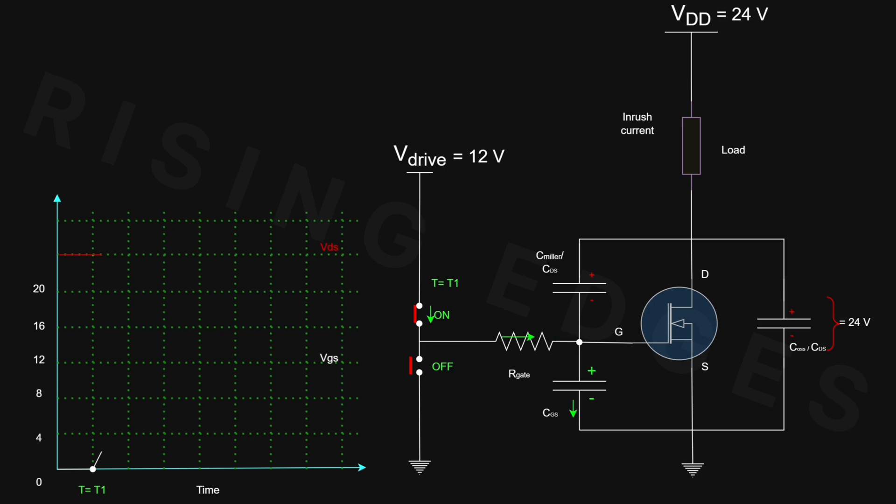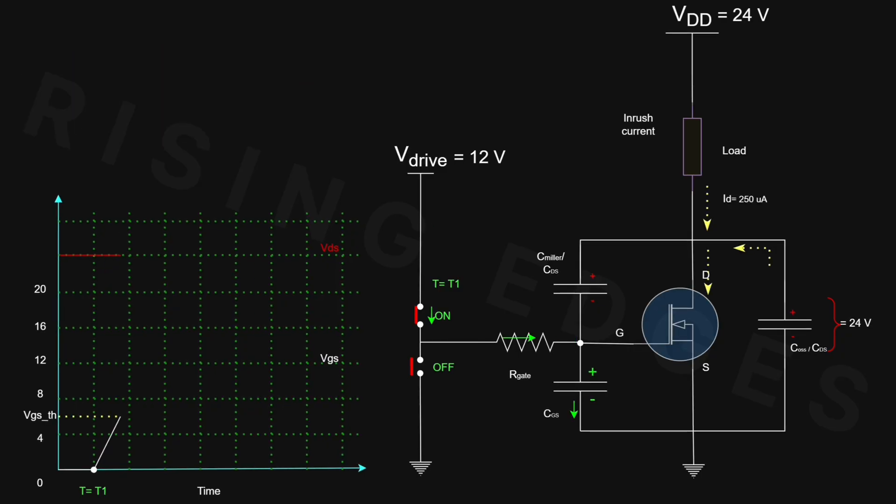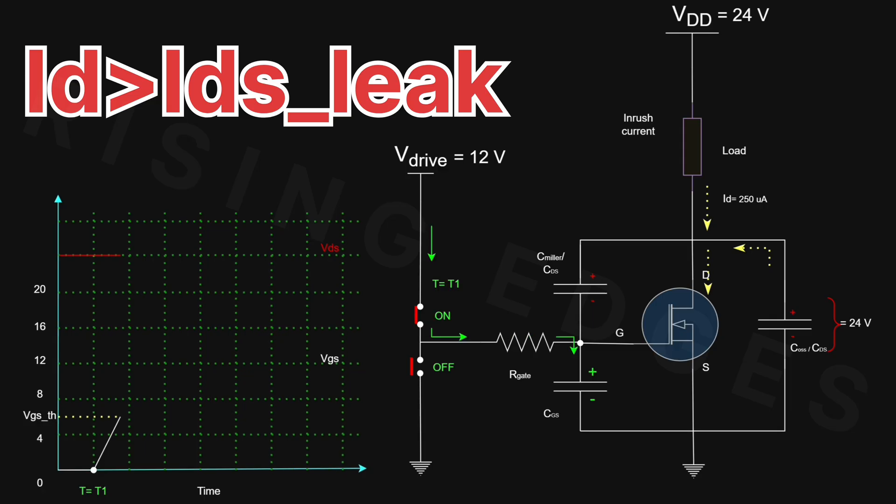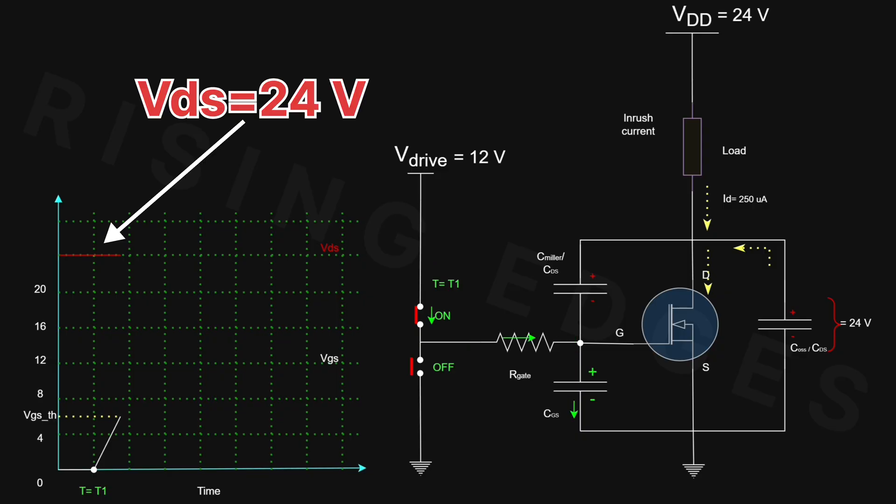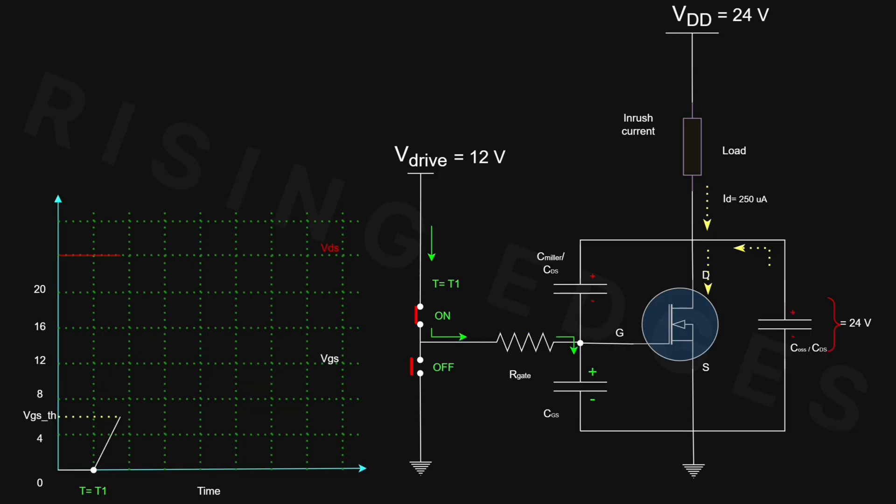As CGS charges, VGS begins to rise. Once VGS reaches the threshold voltage, the MOSFET starts to conduct slightly. Not fully on yet, but just above the leakage. Even though the current is still small, it's enough to begin the increase in drain current ID. At this point, the VDS is still at 24V, meaning the MOSFET is partially conducting. This is where the switching losses occur, because both voltage and current are present in the device simultaneously.